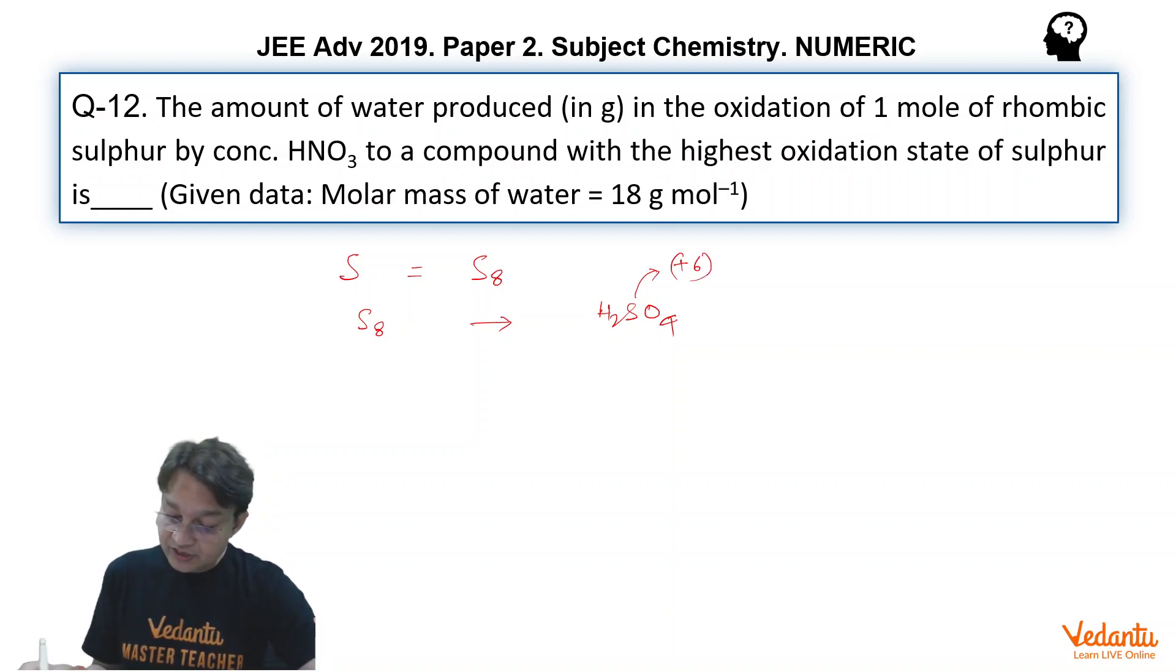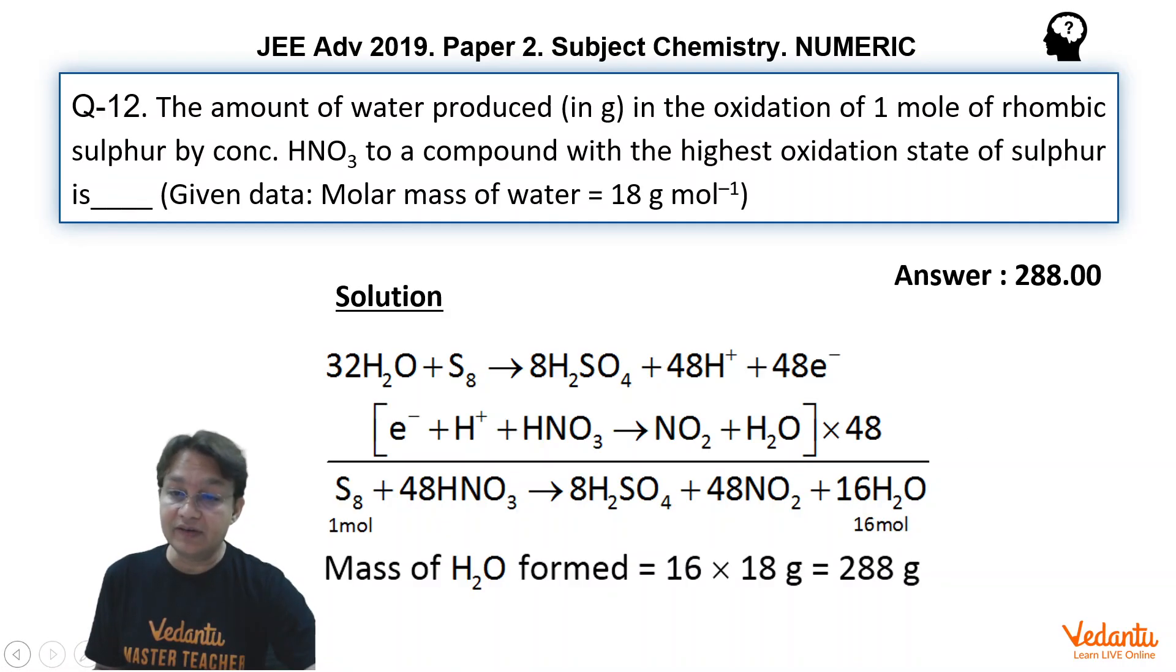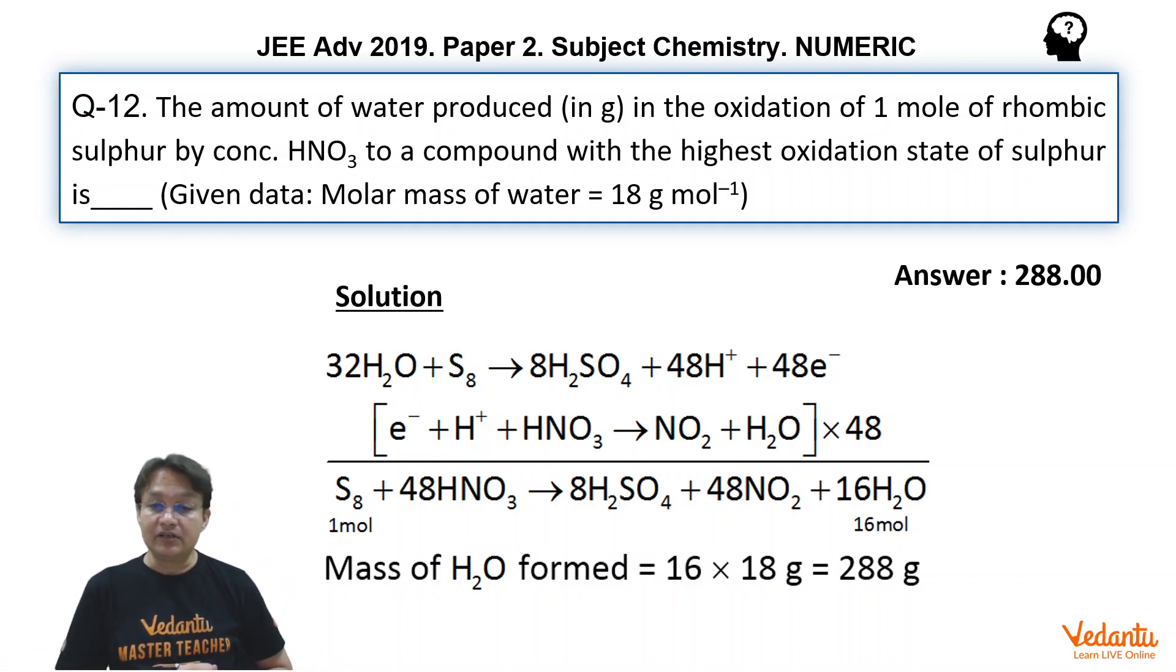And concentrated HNO3, that means if you are using concentrated HNO3, then what is the fate of this concentrated HNO3? Then only we can get the amount of water produced in the oxidation of 1 mole of rhombic sulphur. So concentrated HNO3 will change into NO2 gas. Once you know this information for sure, you can solve this problem.